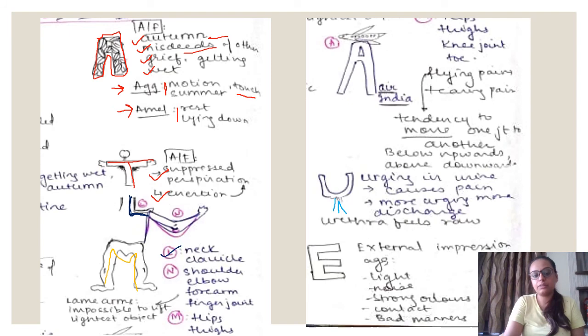And then lastly we come to E. E is just simple E nothing more creative with it. So E is external impressions like light noise, strong odors, contact and bad manners. All of these external impressions cause aggravating, aggravate their complaints. This is very similar to Bryonia if you see.